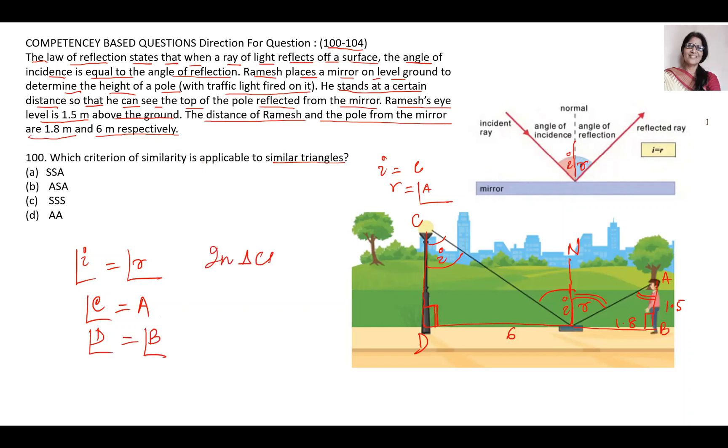So in triangle CDP, CDP is similar to ABP. How? By two angles equal. D angle is equal to B angle, and C angle is equal to A angle. So by AA criterion, A is the answer to this question.